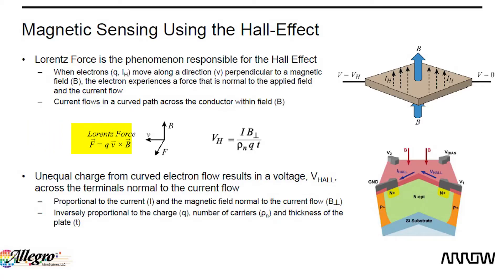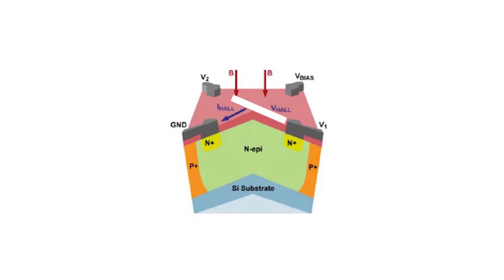Hall Effect Sensors are designed to detect magnets in a short range. The Lorentz force is the phenomenon responsible for the Hall Effect. When electrons move along a direction and a magnetic field perpendicular to the current direction is applied, electrons undergo a force. Instead of going straight, the flow of electrons is curved, creating a voltage that can be measured.